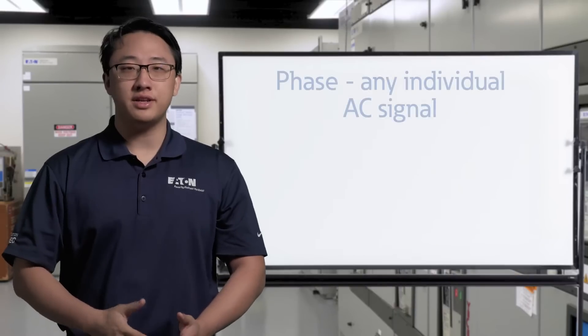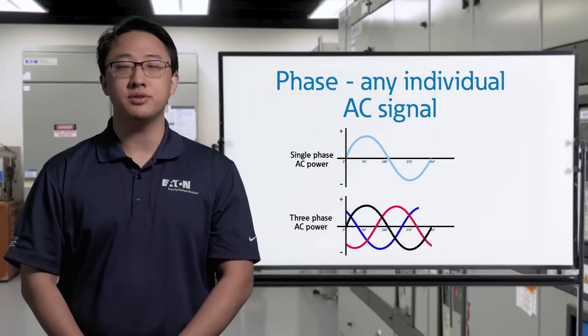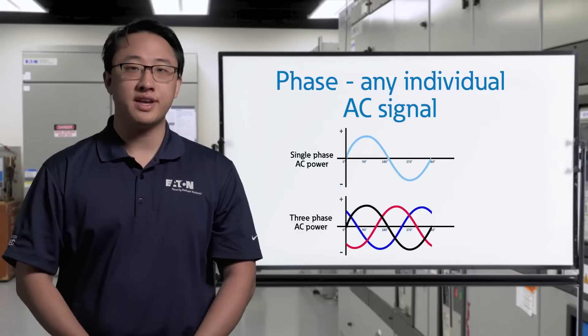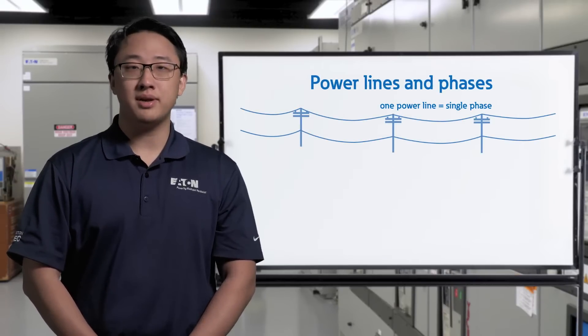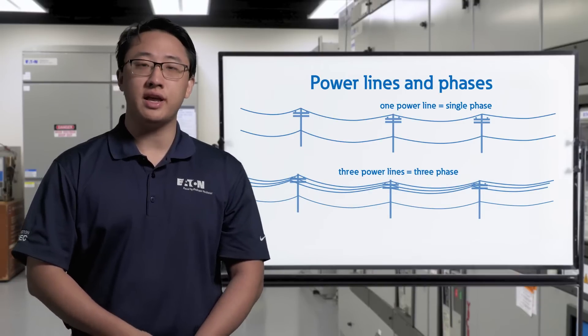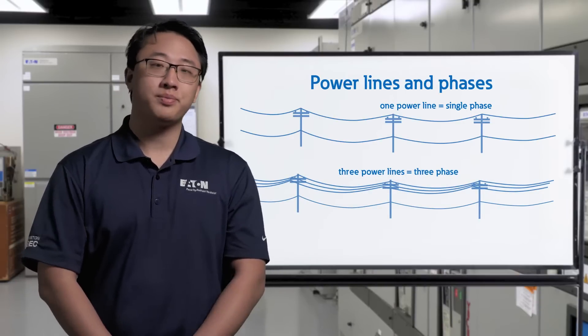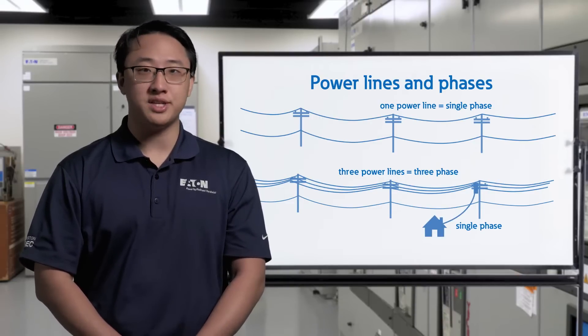A phase is any individual AC signal. The number of phases the system has refers to how many of these will be used to power your system, which is exactly how many incoming conductors there will be. Outside, you may see three utility power lines because power is generated and distributed in three phases. Your house will likely tap off only one of these lines, meaning your home will be fed with single-phase power.